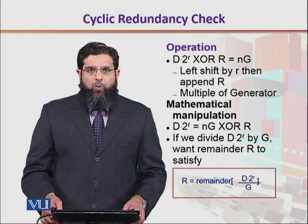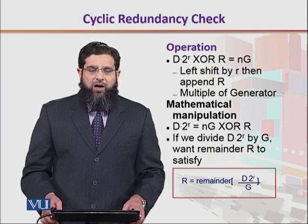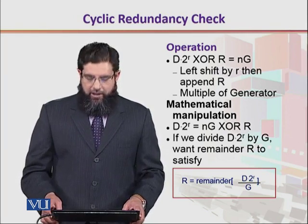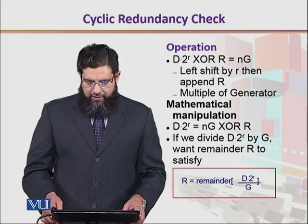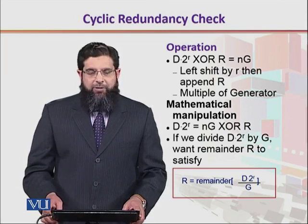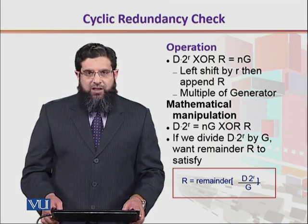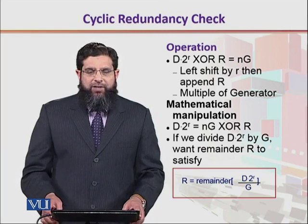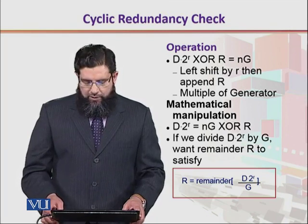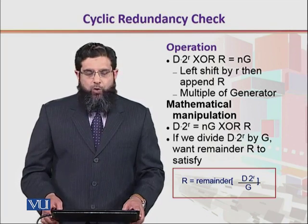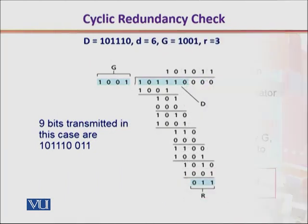So what we are looking at is: capital R is the remainder that makes d times 2 to the power r fully divisible by G.